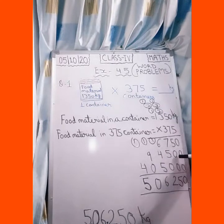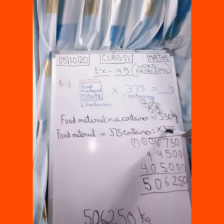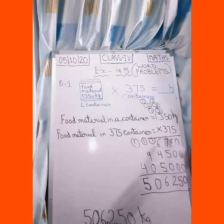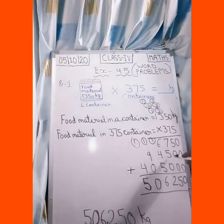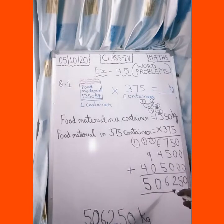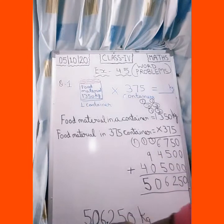Next line, when we multiplied by 3 — the hundreds place — we add two zeros. 3 times 0 is 0. 3 times 5 is 15, carry 1. Then 3 times 3 is 9 plus 1 is 10 — write 0, carry 1. 3 times 1 is 3 plus 1 is 4. Now we add all the rows: 0 plus 5 plus 0 is 5. 7 plus 5 is 12 — write 2, carry 1. 1 plus 6 is 7. 7 plus 4 is 11. 11 plus 5 is 16 — write 6, carry 1. 9 plus 1 is 10 — write 0, carry 1. 1 plus 4 is 5.